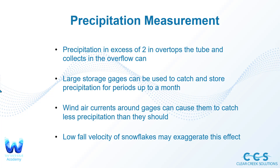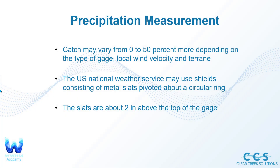The low fall velocity of snowflakes may exaggerate this wind effect, because a slowly falling snowflake is easily blown by the wind, affecting how much precipitation is recorded in that area. Catch may vary from 0 to 50% or more depending on the type of gauge, local wind velocity, and terrain.